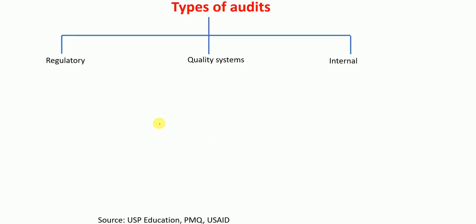What are the different types of audits? There are mainly three types of audits that are performed: regulatory audit, quality systems audit, and internal audit.